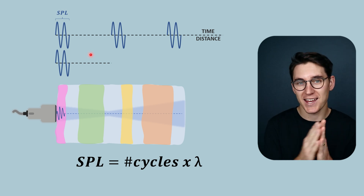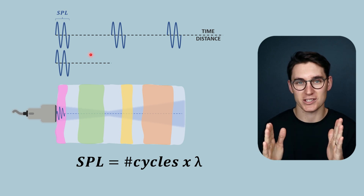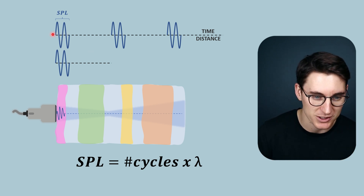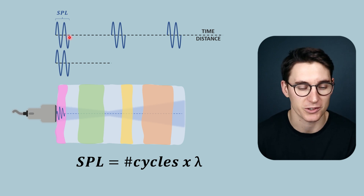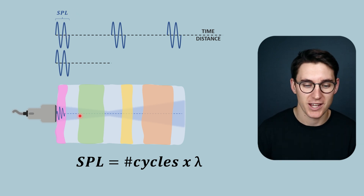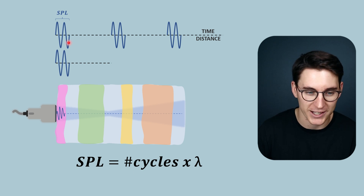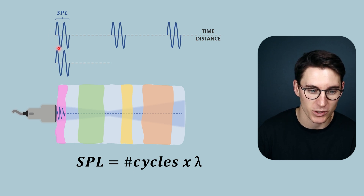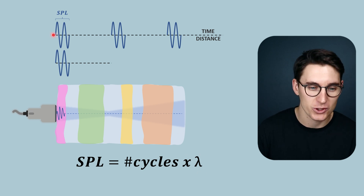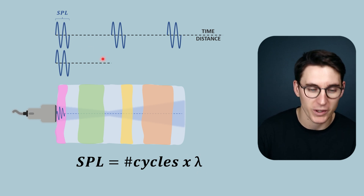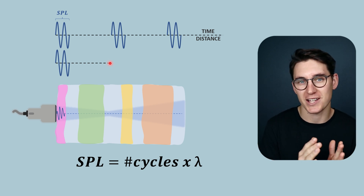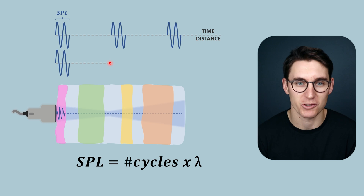The spatial pulse length is the total distance of a single pulse that we send into tissues. The time this pulse takes is what's known as our pulse duration. Our spatial pulse length is a distance measurement: if we take the number of cycles within our pulse — in this example, two cycles — and multiply by the wavelength, we will get our spatial pulse length.